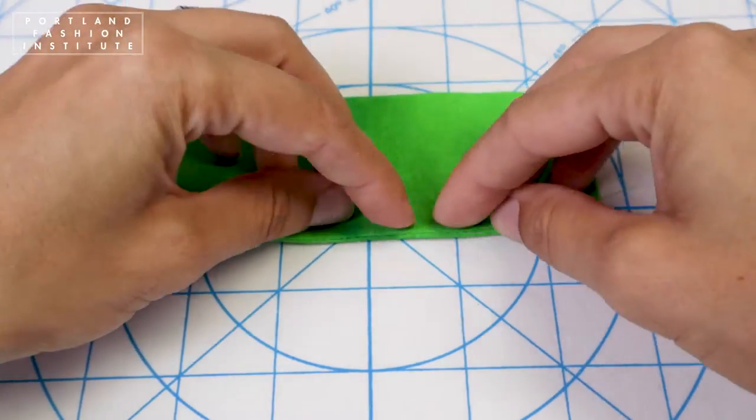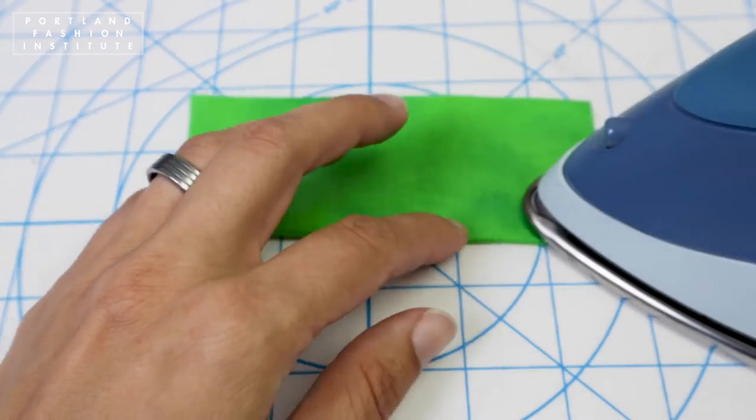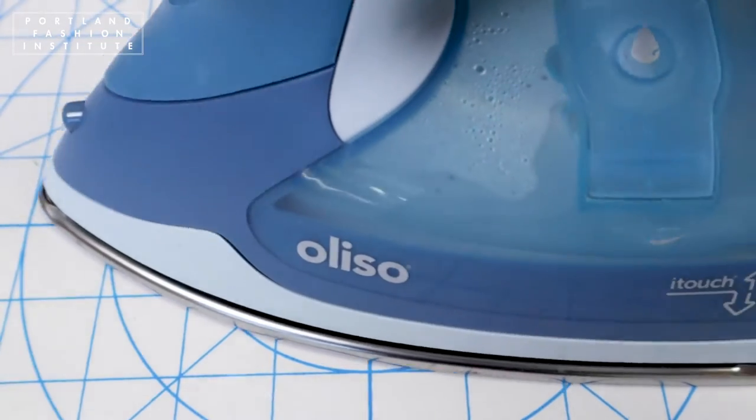Step 4. Fold the piece wrong sides together with the seam on the very edge and press again.